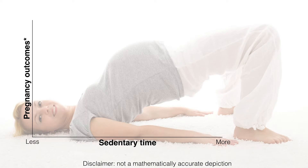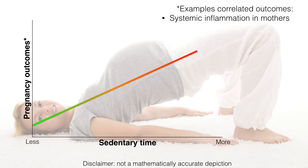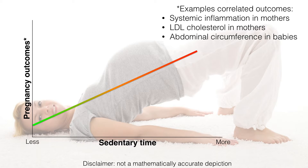Sedentary time also affects pregnant women and the developing fetus. Risk of adverse changes in the mother and child go up with increasing sedentary time. Examples include systemic inflammation in the mothers, elevated LDL cholesterol in mothers, greater abdominal circumference in babies, and more large babies being born to women spending more time sedentary throughout pregnancy.